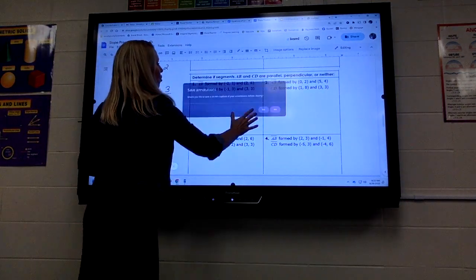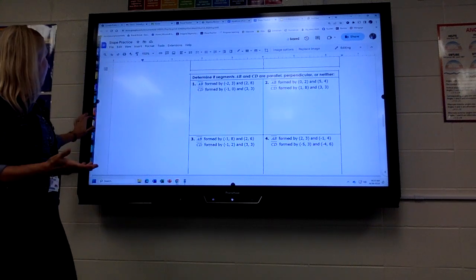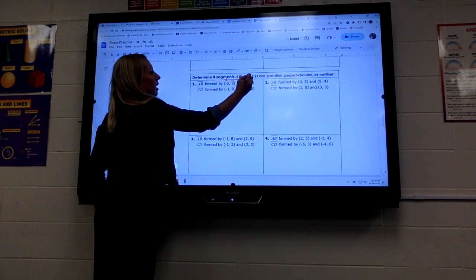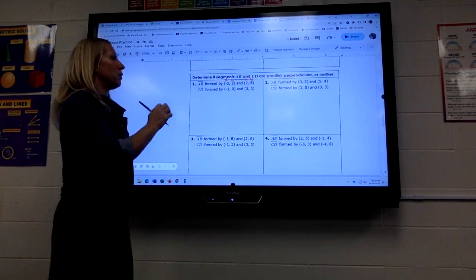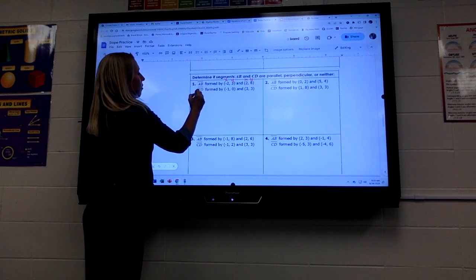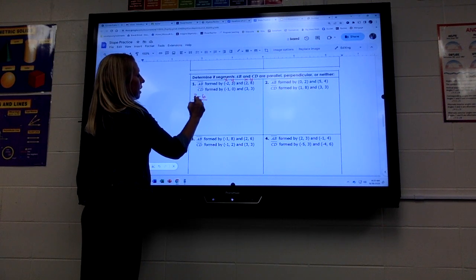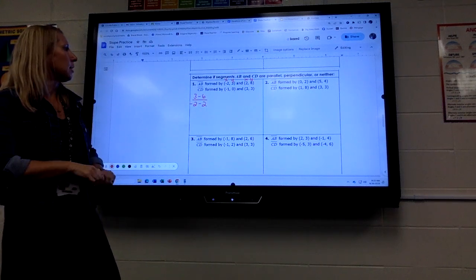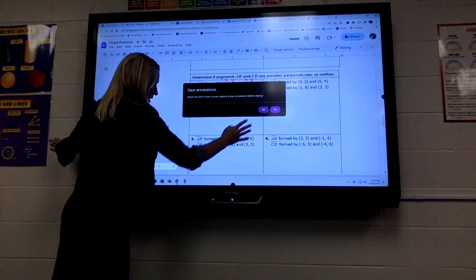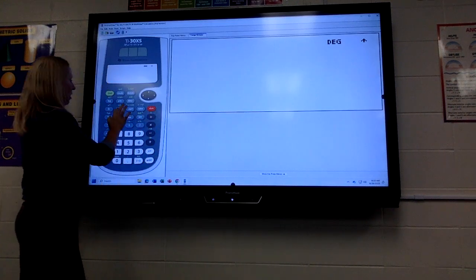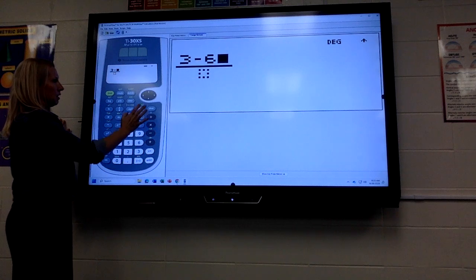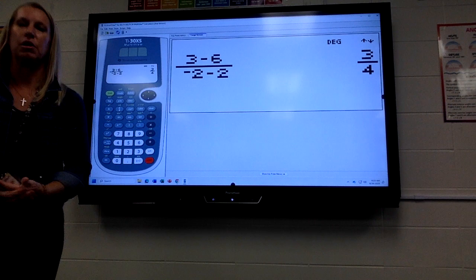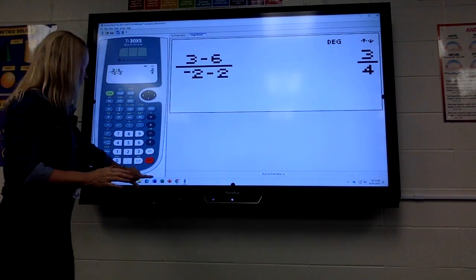So if they're identical, exactly the same, it's parallel. If they're opposite reciprocals, it's perpendicular. If they're not either one, it's neither. Okay, so let's try this first one. So I've got to find the slope of both lines. So remember x, y, x, y. So we subtract the y's on top. 3 minus 6, negative 2, minus 2. So that's going to be my first one. Hit enter. Just keep that number in your calculator and write it down so you remember it. So 3 fourths.